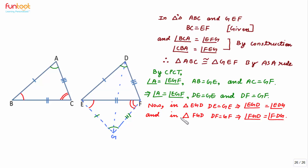Also in triangle FGD, DF is equal to GF. Once again, due to the same reason — angles opposite equal sides are equal — angle FGD is equal to angle FDG.